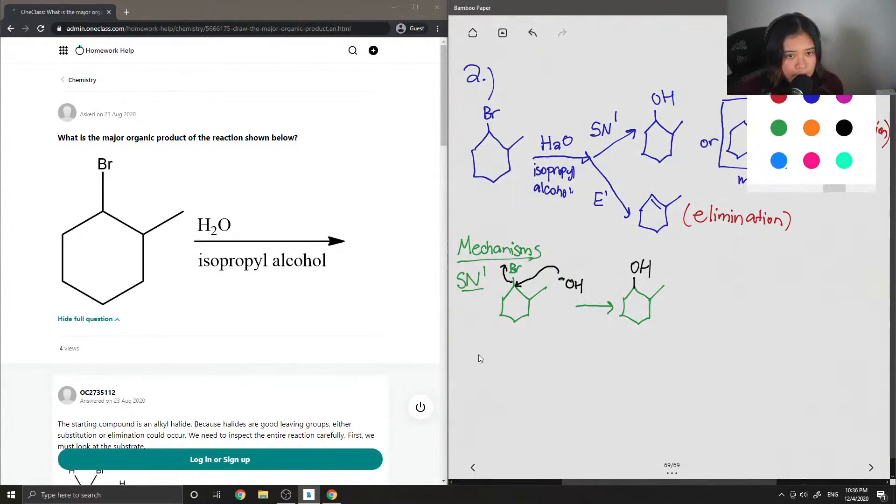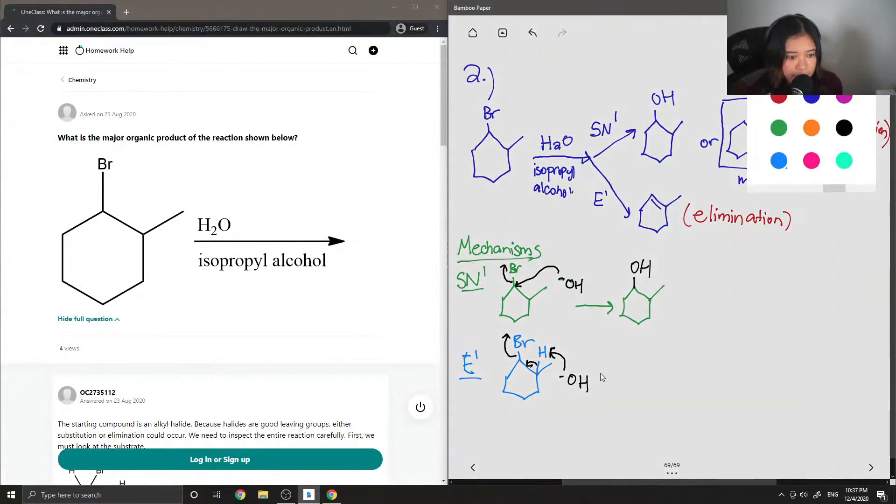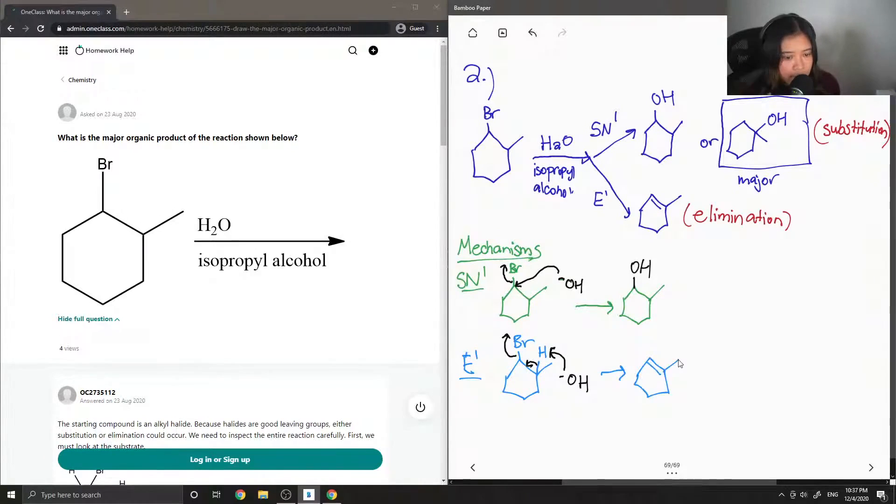And then for our second from the elimination reaction, the OH here comes in and deprotonates this hydrogen forming a double bond and then kicking off the bromine. And then this is how we get our other product.